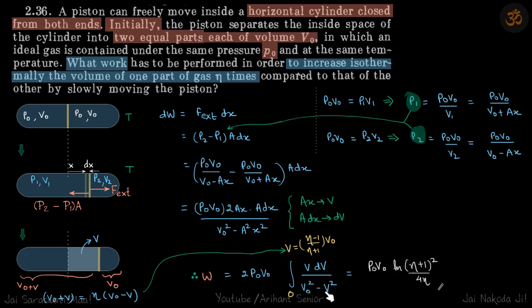Now limits of V. So eventually this is the final position of the piston. So it's given that in final position, the ratio of bigger volume to smaller volume is eta, which means V0 plus V is equal to eta times V0 minus V.